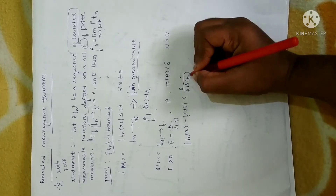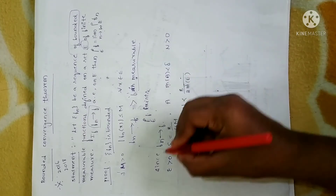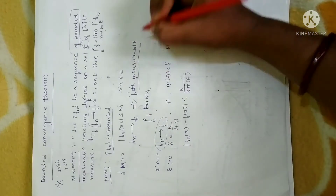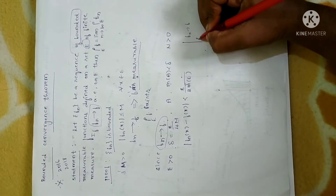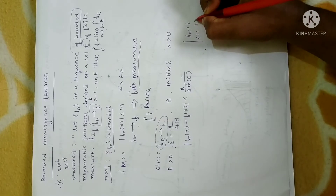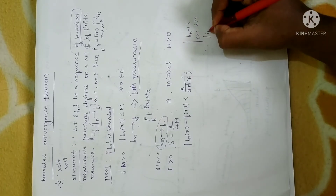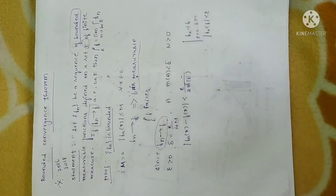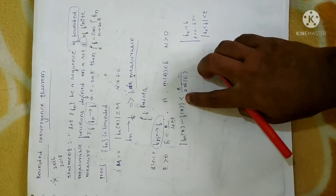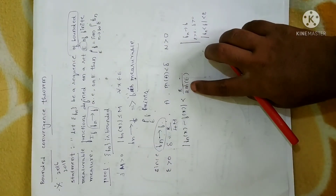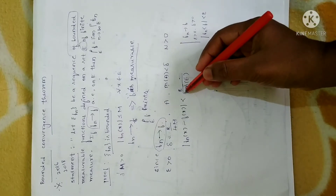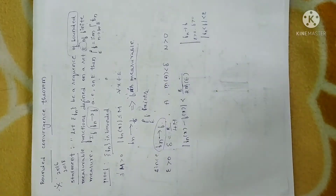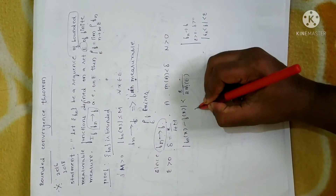I have applied the definition of convergence. The usual definition is: whenever a sequence Fn converges to F, for any ε > 0 we can write |Fn − F| < ε. Here instead of ε, I have chosen ε/(2·m(E)), which is a value lesser than ε — dividing ε further by 2 times the measure of E. This holds for all x in E minus A and for all n ≥ N.